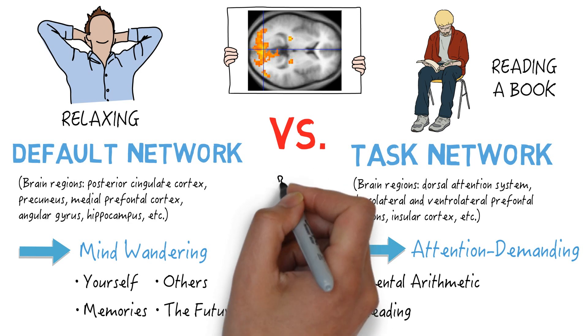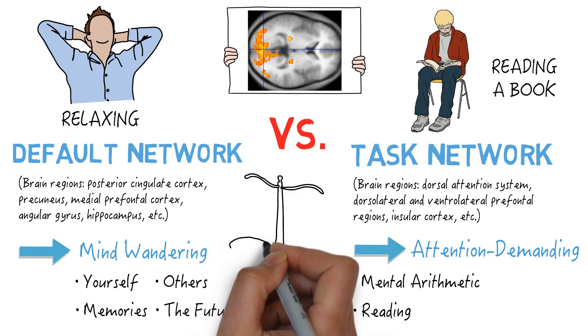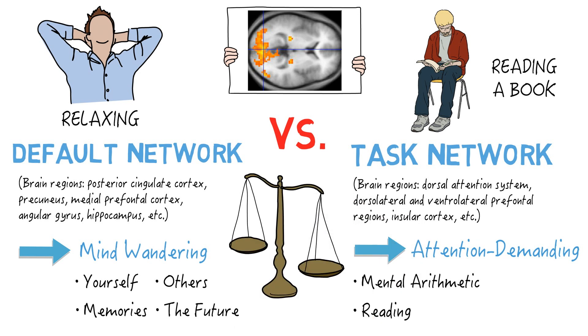The interesting thing about these networks is that they seem to exist in balance. If one is doing more work, the other is doing less. When you start doing something like reading, the task network starts working harder and the default network chills out a bit.